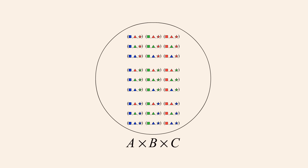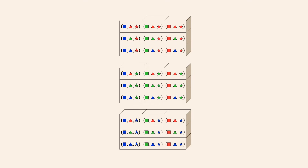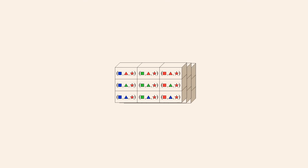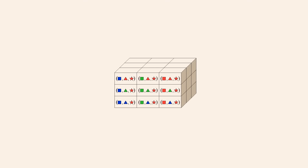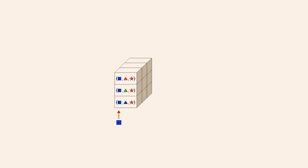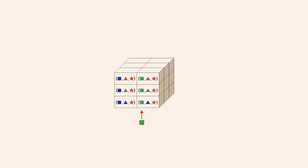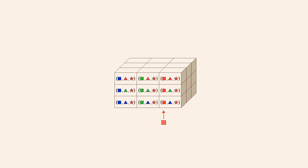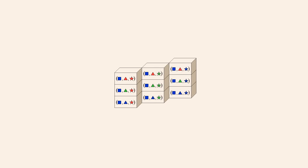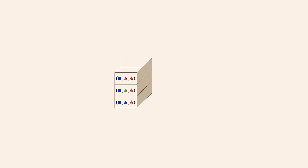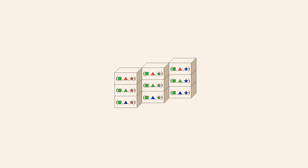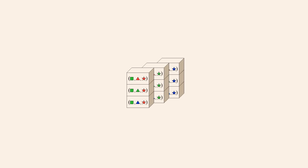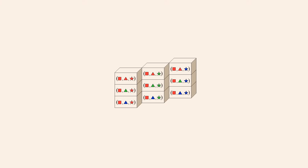The ordered triples from the Cartesian product of three sets can be arranged in a three-dimensional grid. We can arrange the blocks so that all the first elements are the same in the left plane of blocks, the middle plane of blocks, and the right plane of blocks. For example, all the first elements in the left plane of blocks are blue squares, the middle plane are green squares, and the right plane are red squares.